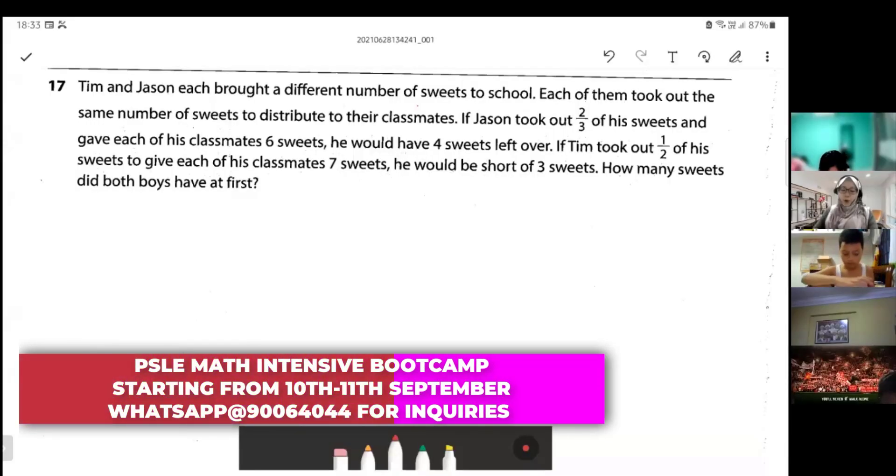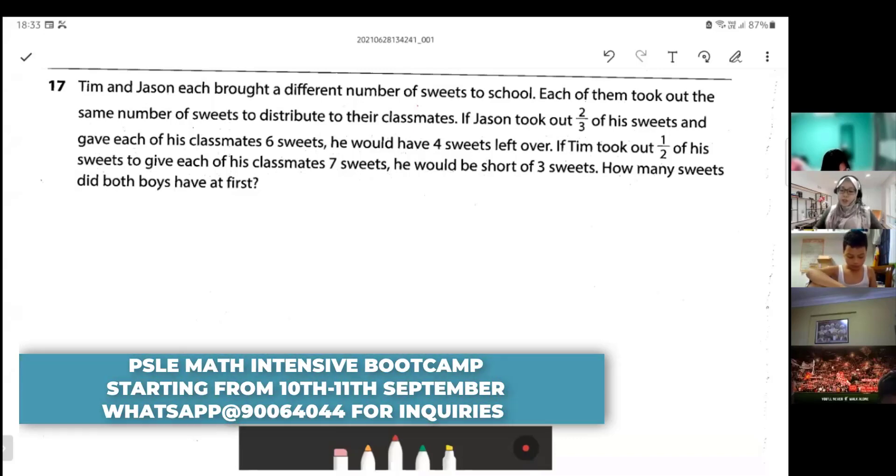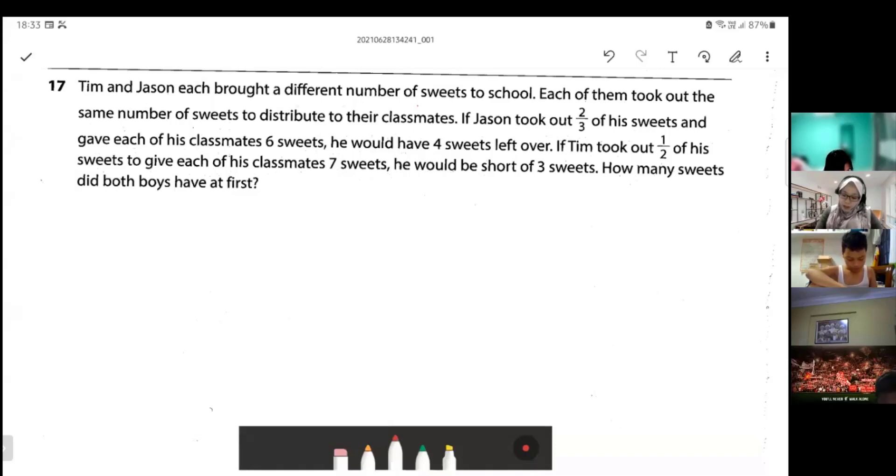Tim and Jason brought a different number of sweets to school. This is your key there - different number, it's not equal, it's not Jason and Tim equal number of sweets.